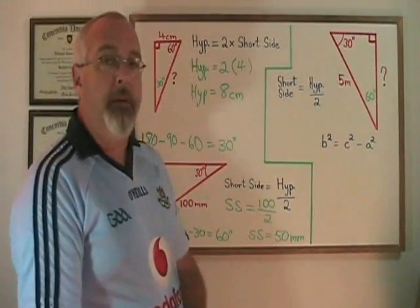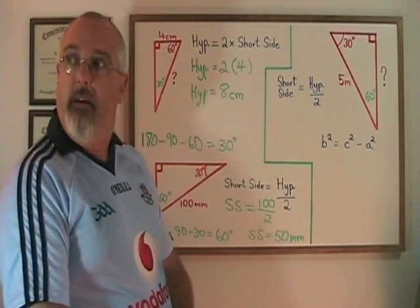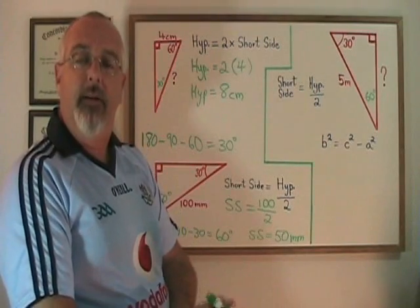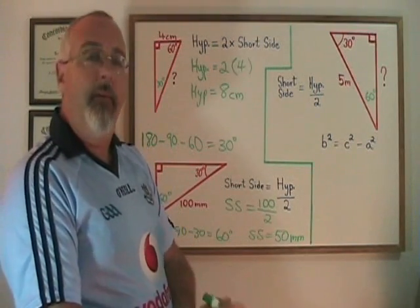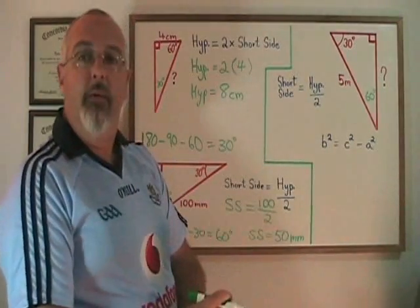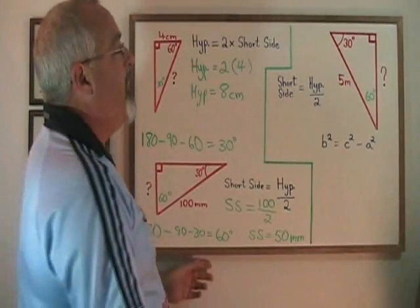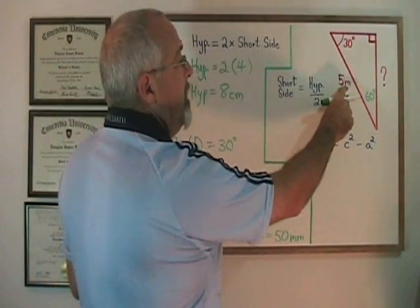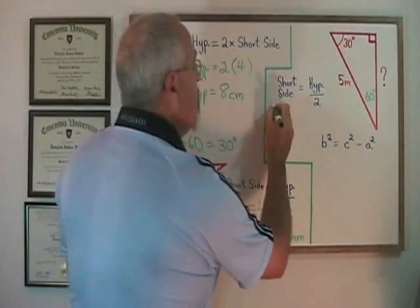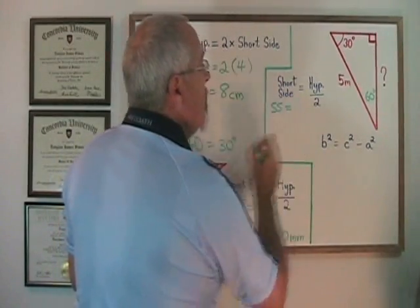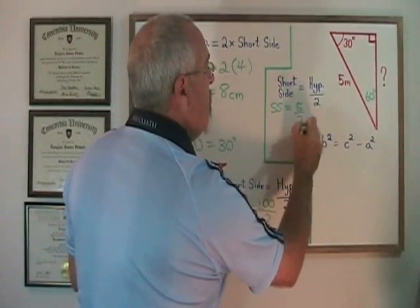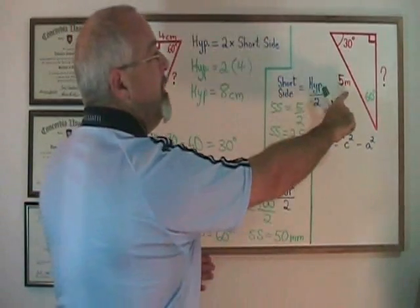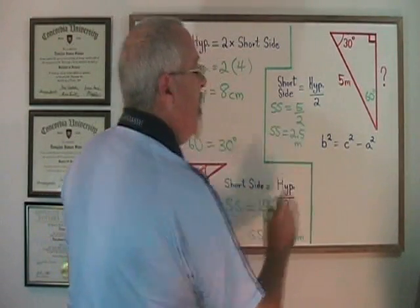But we can't use Pythagorean theorem if we only know one side. There are three variables in Pythagorean theorem, and if we want to solve for a missing side with algebra, we have to be able to replace two of those with a value, a number. Well, using this property will allow us to do that. We can see that the hypotenuse is 5 meters in length, so the short side must be equal to 5 divided by 2. The short side is equal to 2.5. Because the unit of measure is meters, the short side is 2.5 meters.